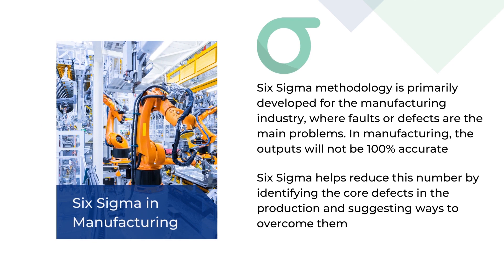Six Sigma explains defects as exceptions from the customer requirements. Six Sigma is combined with lean manufacturing to reduce waste and thus reduce the defects in production. It is called Lean Six Sigma, where both waste reduction and defect reduction are attained with a single methodology. Six Sigma is based on data collected from the manufacturing unit and market — it is a data-driven or measurement-based approach that deals with the number of defects per million.